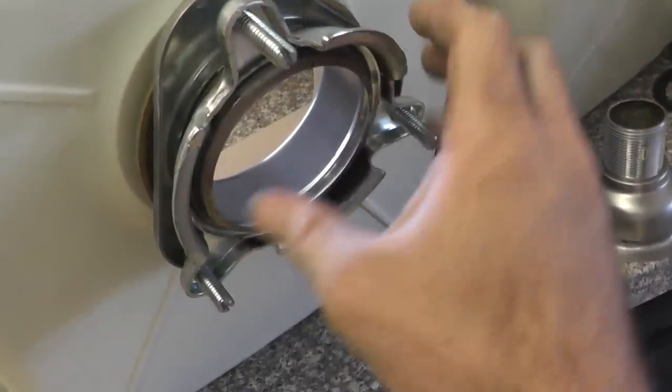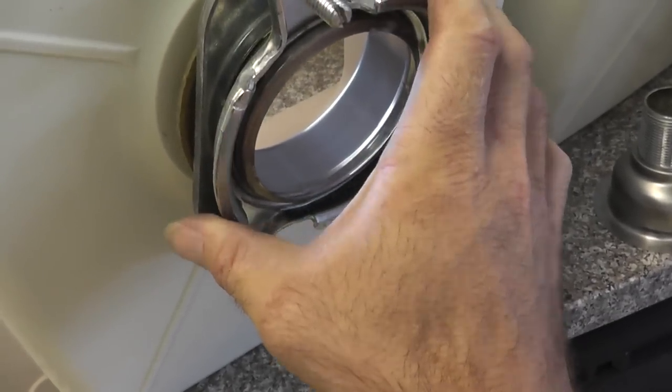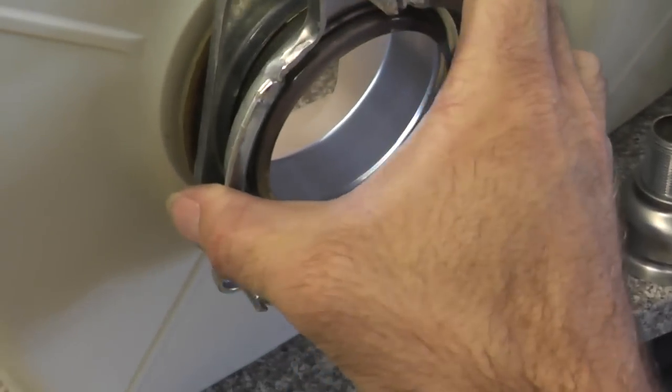And you can see that once the screws are loose, if you pull on this ring, it pulls this strainer down against the bottom of the sink.